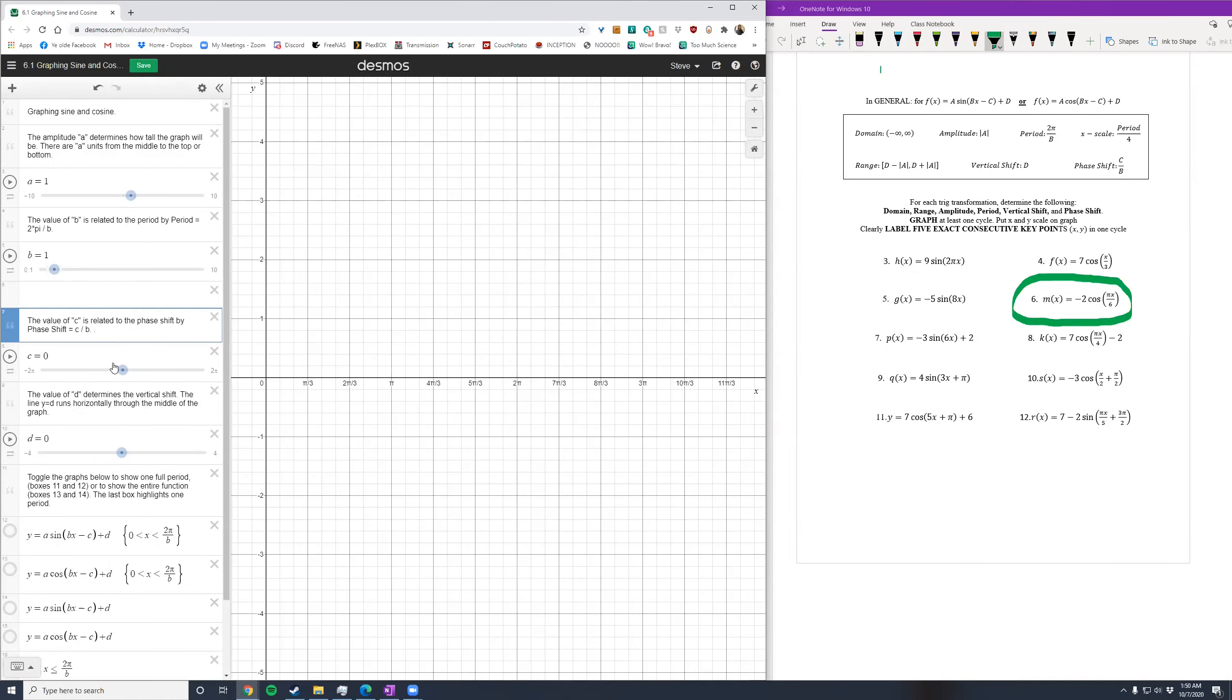Now problem 6, negative 2 cosine of π over 6x. I'll turn on cosine, change a down to negative 2, and b adjust down to be π over 6, pretty close to 1 half.